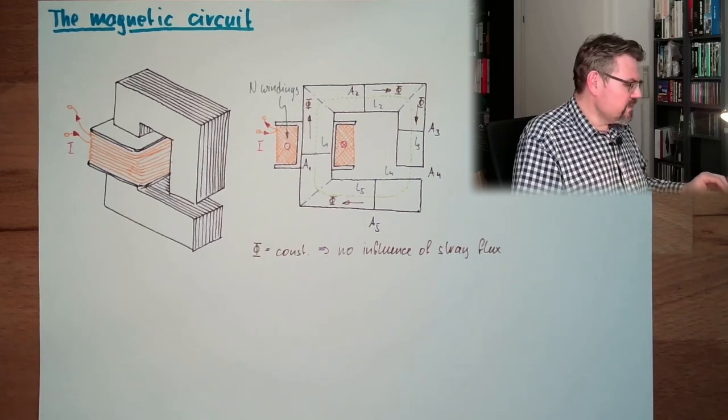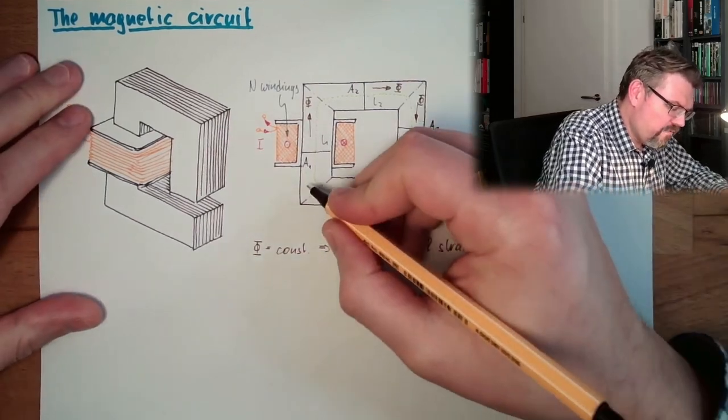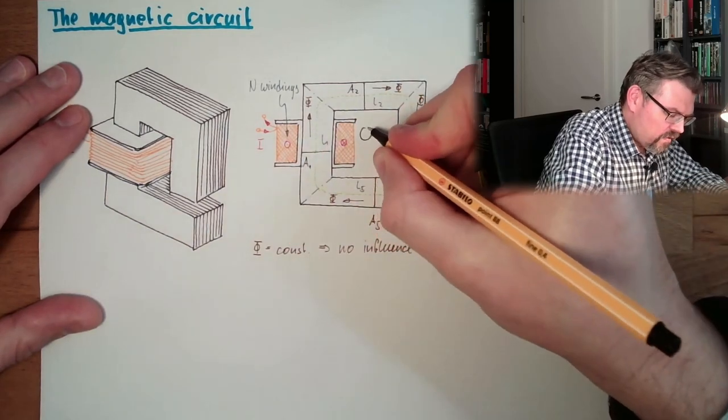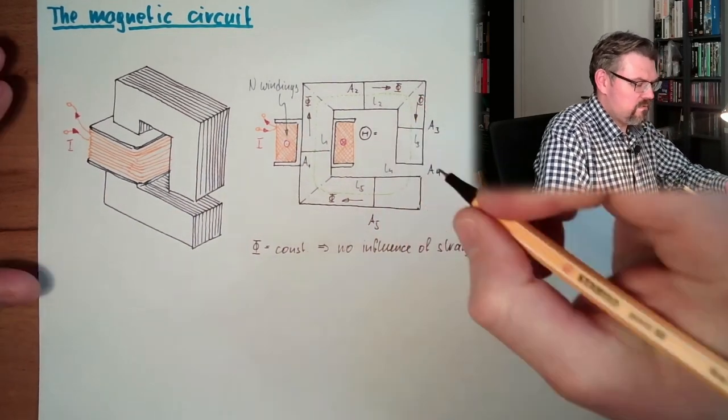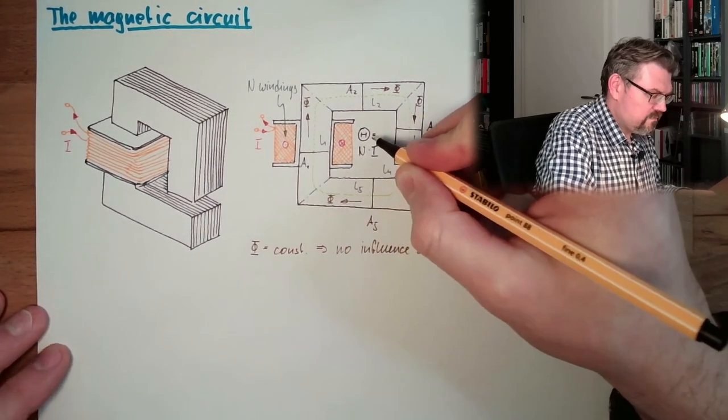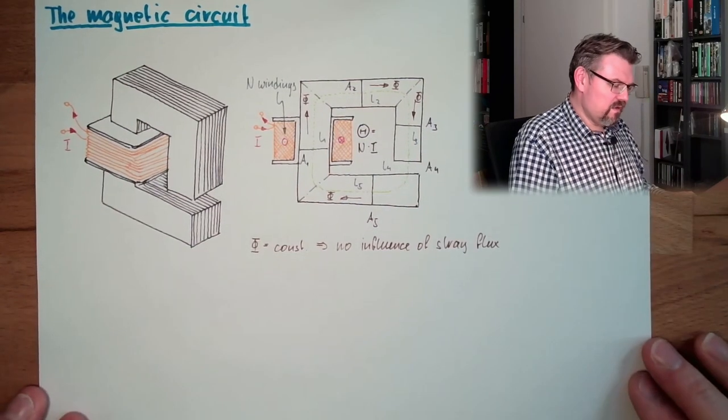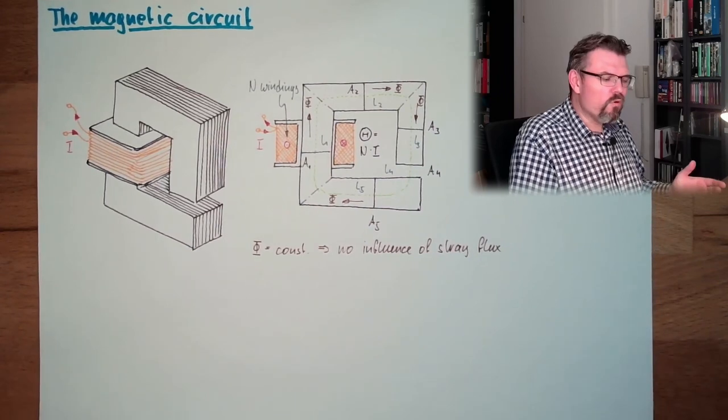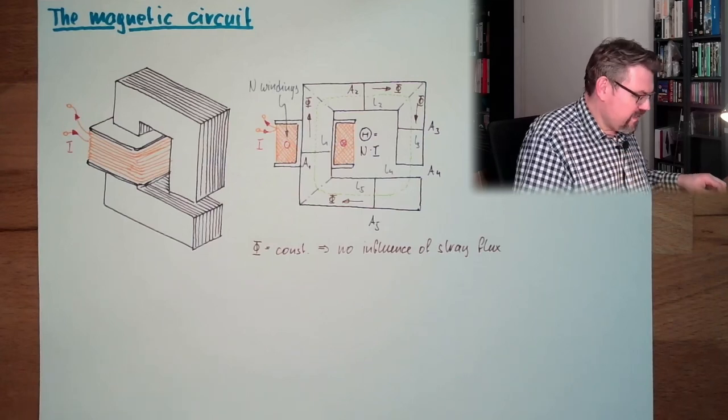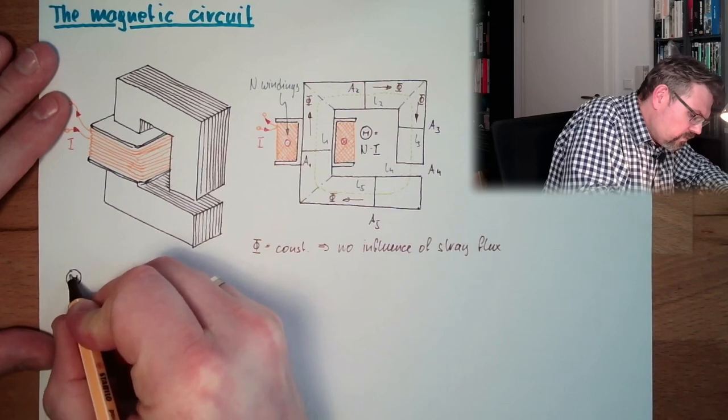Then what is our durchflutung? What is our theta? If we have a look at this area, here right-handed. Our theta equals n times i. So this is our magnetomotive force. Because actually theta now is this theta.